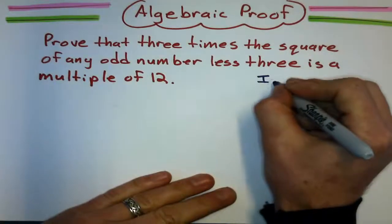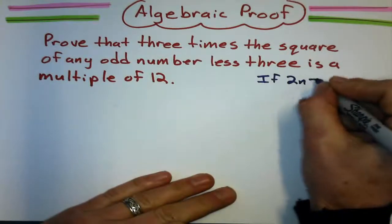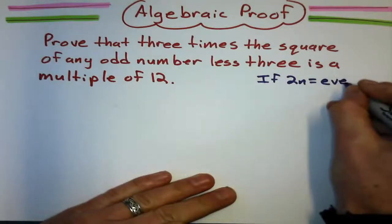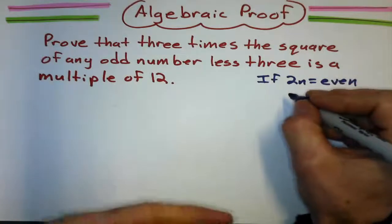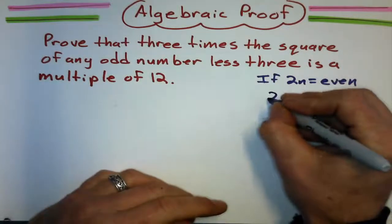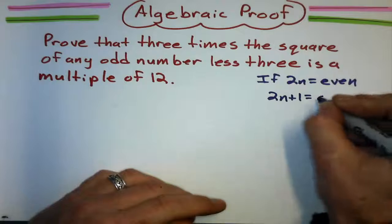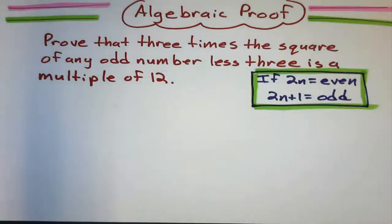So first of all, we already said if 2 times n is going to equal any even number, because even means multiple of 2, then one more is going to be an odd. 2n plus 1 is going to be an odd. Okay, we'll start there.